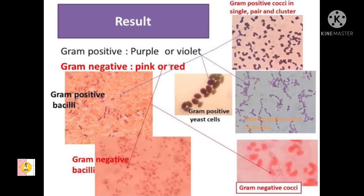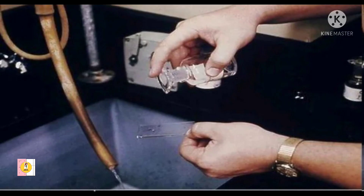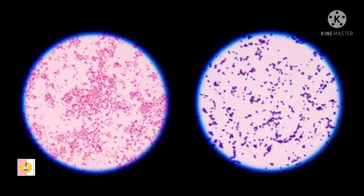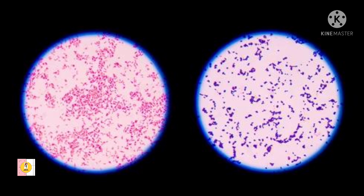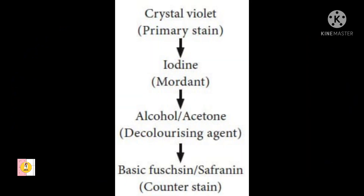On observation, gram positive bacteria will show a purple or violet color, whereas gram negative bacteria will show a pink color. Why do the bacteria show different colors? During the decolorization step, when we decolorize the smear with alcohol, gram positive bacteria will not decolorize, but gram negative bacteria will get decolorized. So in the counter staining step, when we stain the smear with safranin — the pink dye — the gram negative bacteria, whose color was removed during decolorization, will take up the pink color. The gram positive bacteria will retain the violet color applied in the first step.